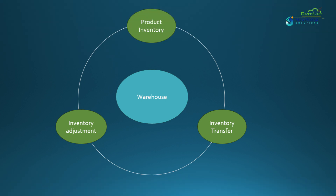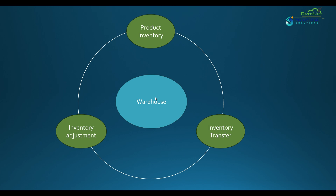We will discuss warehouse management — a location where inventory is stored. This can be a physical building, a storage room, or even a mobile unit like a service truck. Warehouses help track where products are stored and ensure field agents have the necessary supplies. And Product Inventory is the quantity of a specific product available at a given warehouse. It includes details such as quantity available, quantity on hand, and quantity allocated.